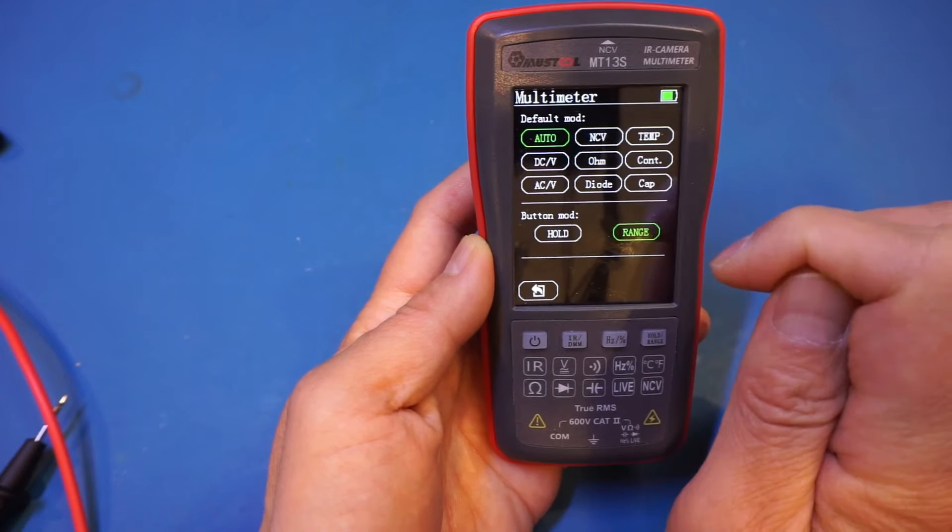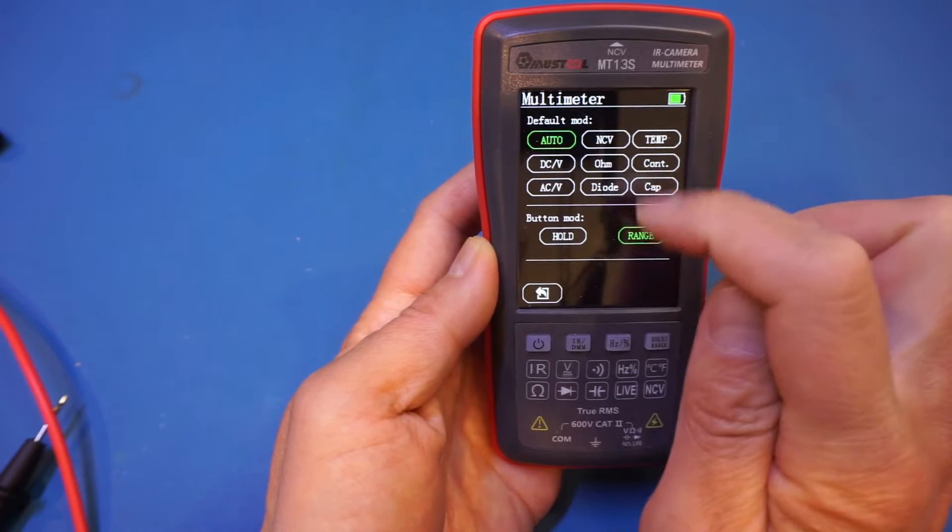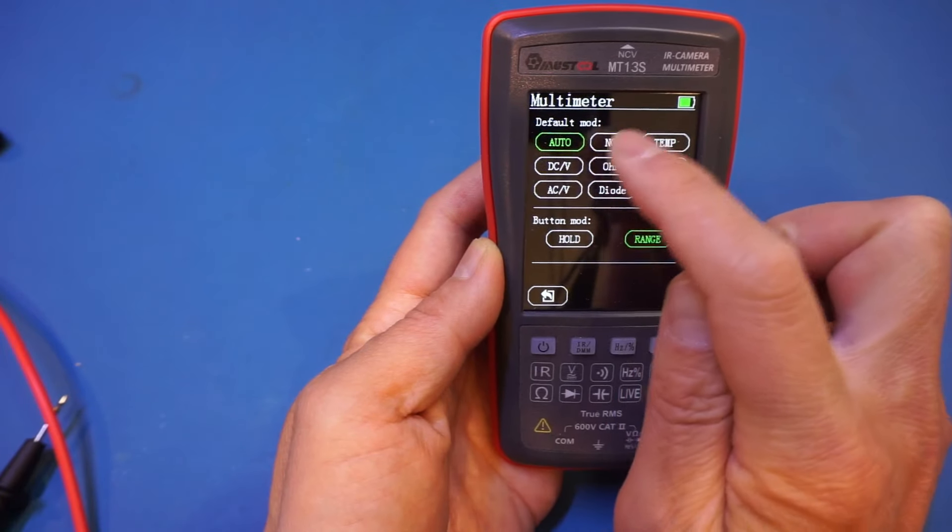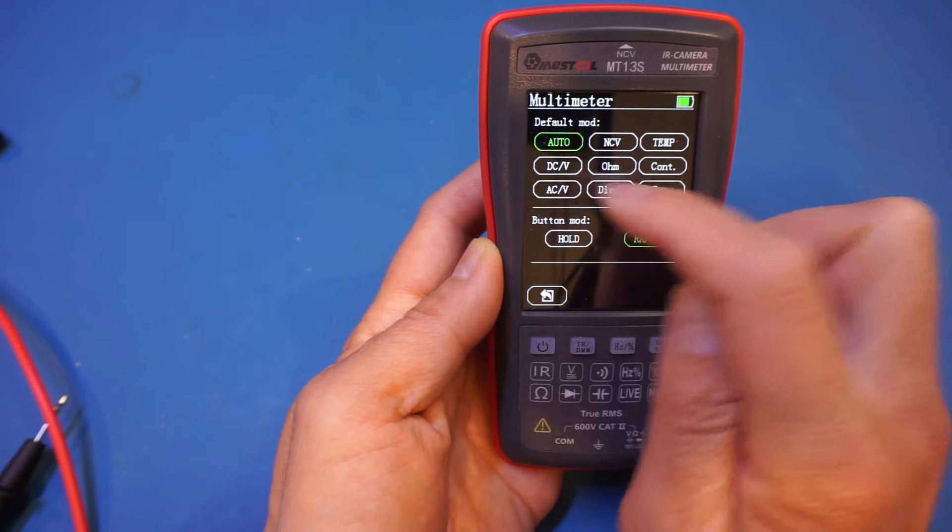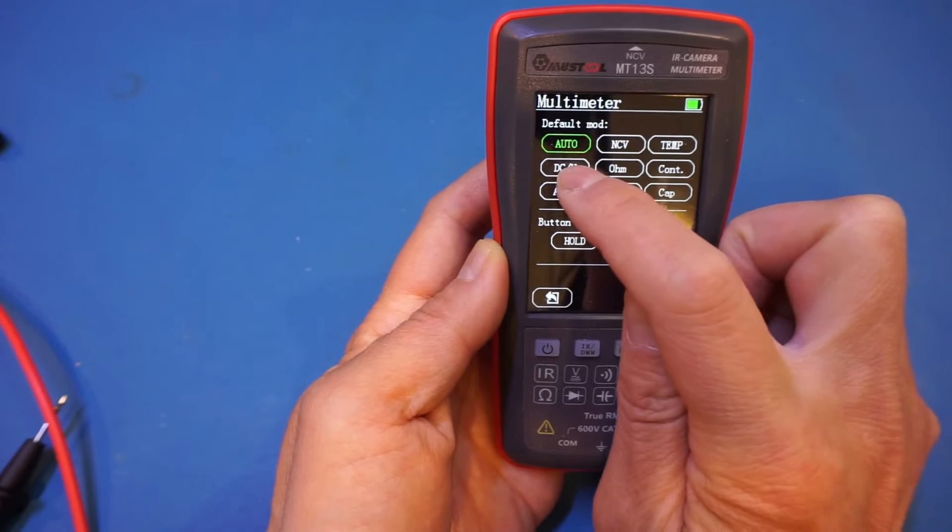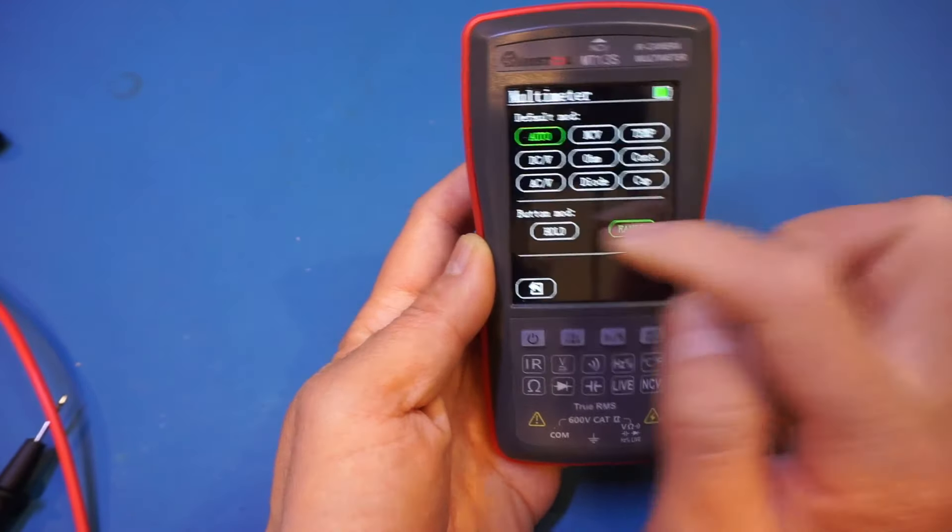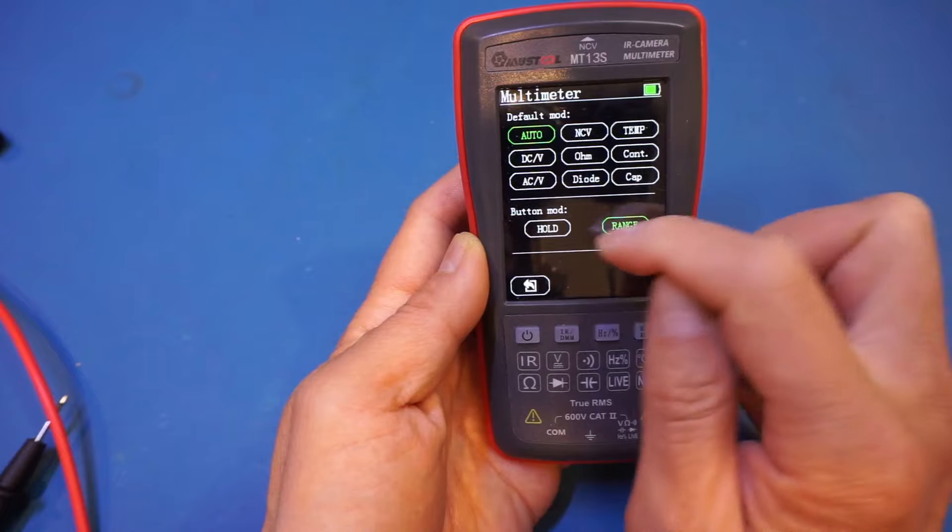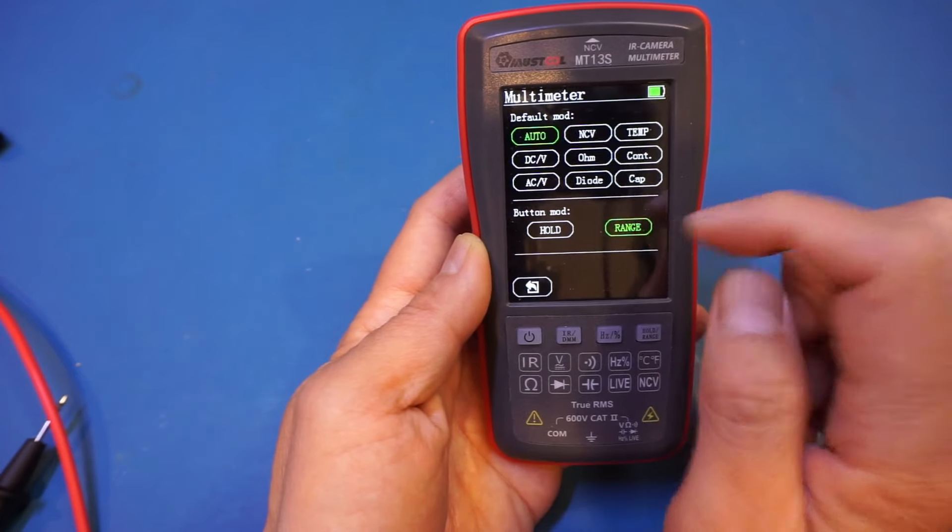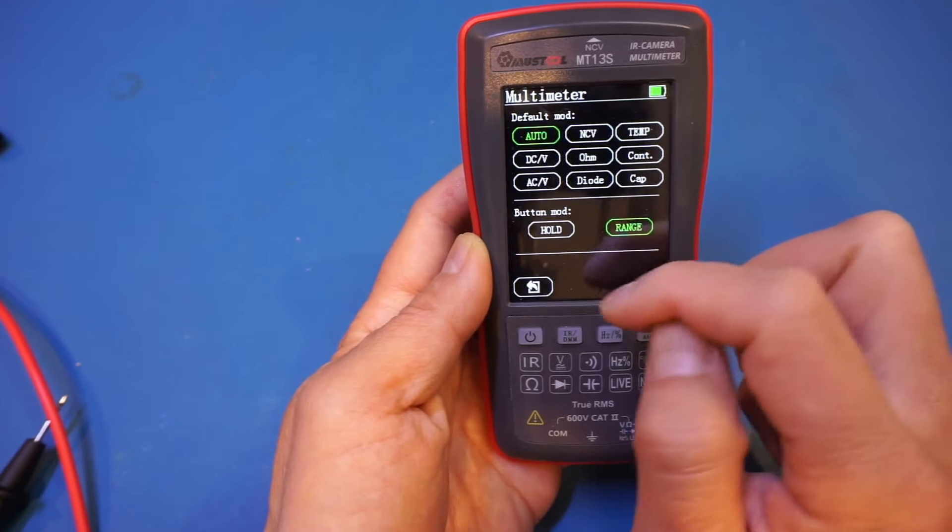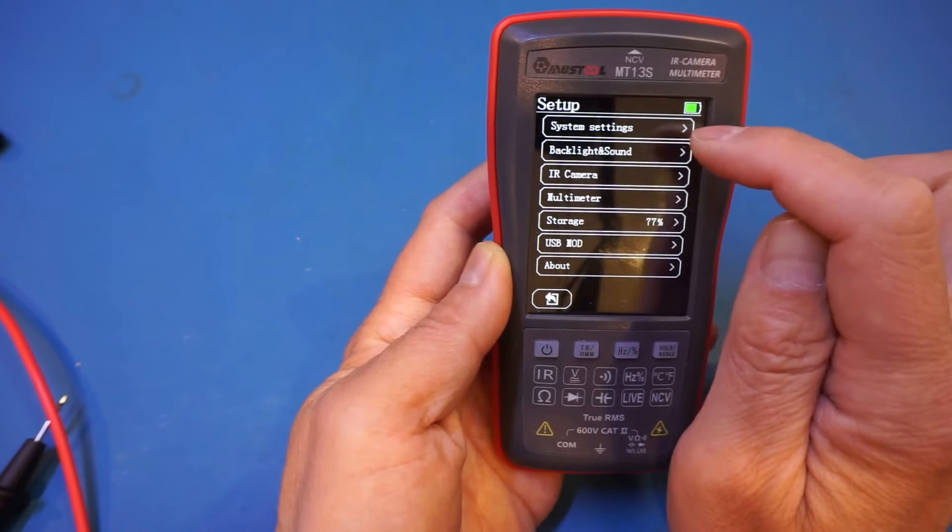And for the multimeter mode, let's see, we can select a default mode. Right now it is set to auto, but I find it quite annoying as we have shown earlier. I'd rather boot directly into DC measurement mode instead. And for this hold and range button, you can define it to be either hold or range. I prefer to set it to range.